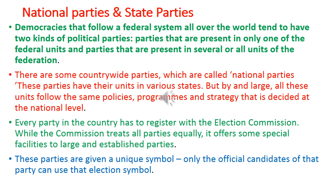Every party in the country has to register with the Election Commission of India. While the Election Commission treats all parties equally, it offers some special facilities to large and established parties. These parties are given a unique symbol. In a country like India, we can see two types of parties — a party which has branches all over India in every village and is visible everywhere.